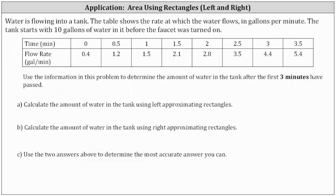Water is flowing into a tank. The table shows the rate at which the water flows in gallons per minute. The tank starts with 10 gallons of water in it before the faucet was turned on. Notice how we have the time every 0.5 minutes and we have the corresponding flow rate. We're told to use the information in this problem to determine the amount of water in the tank after the first three minutes have passed.